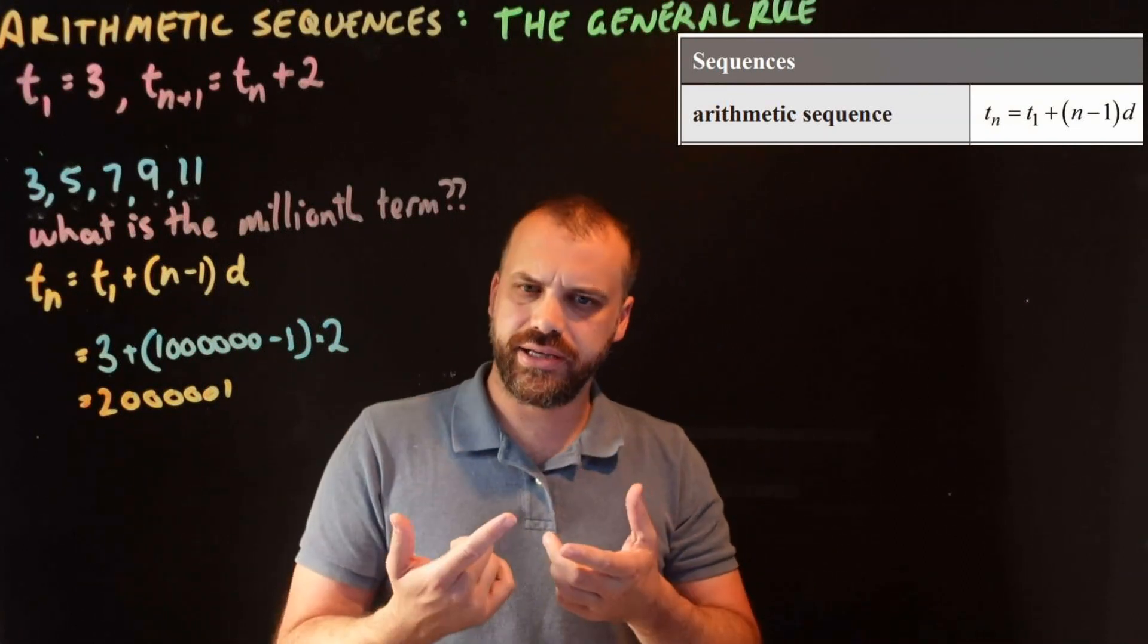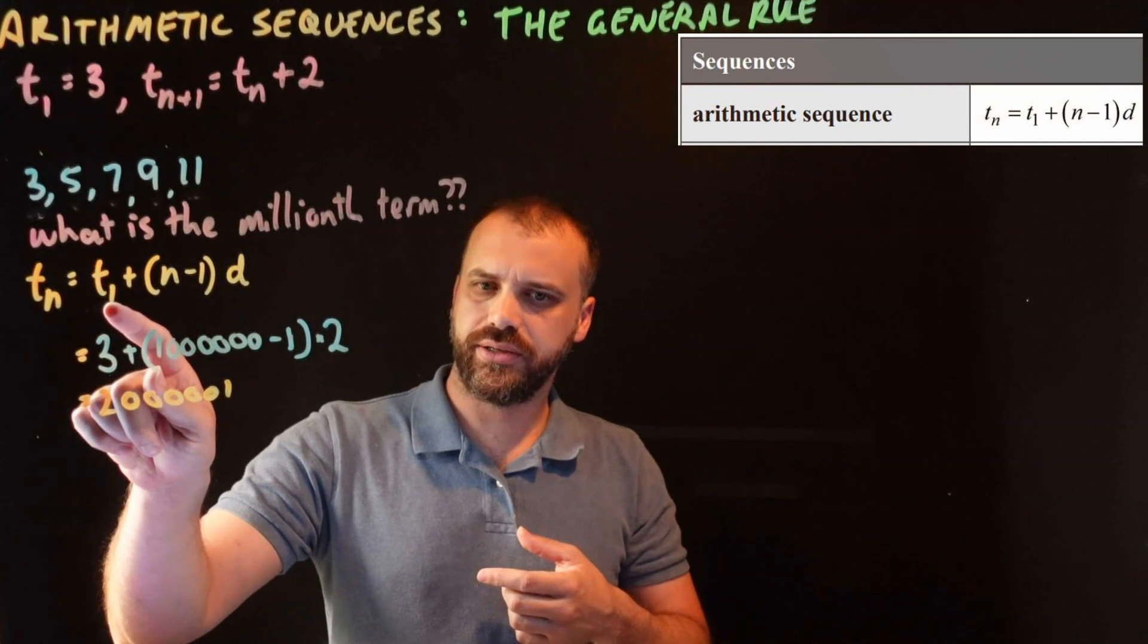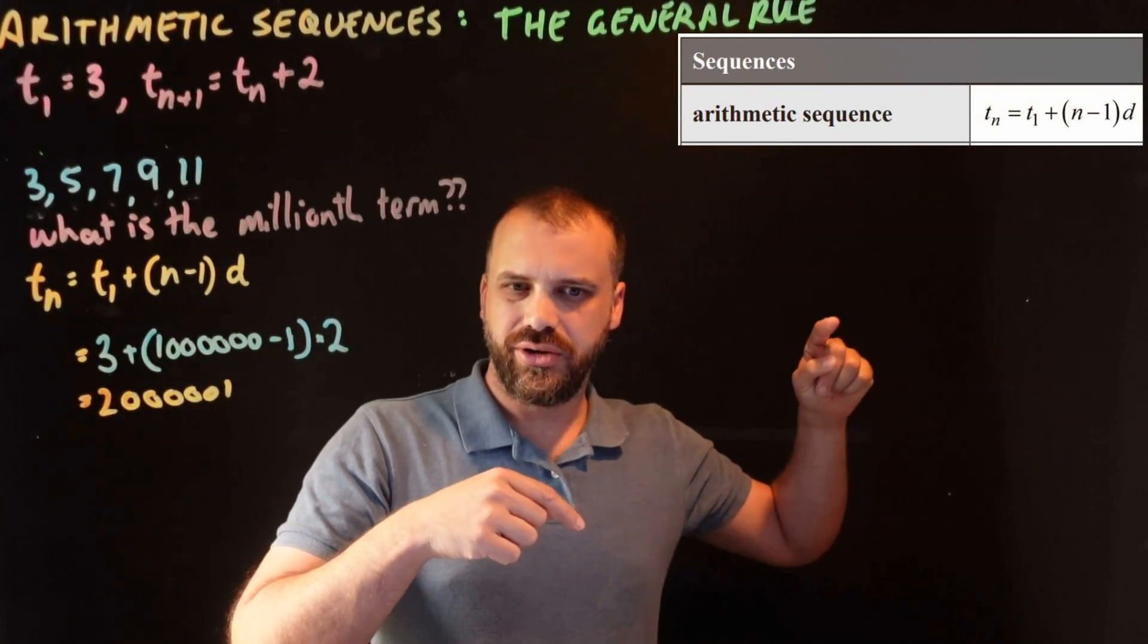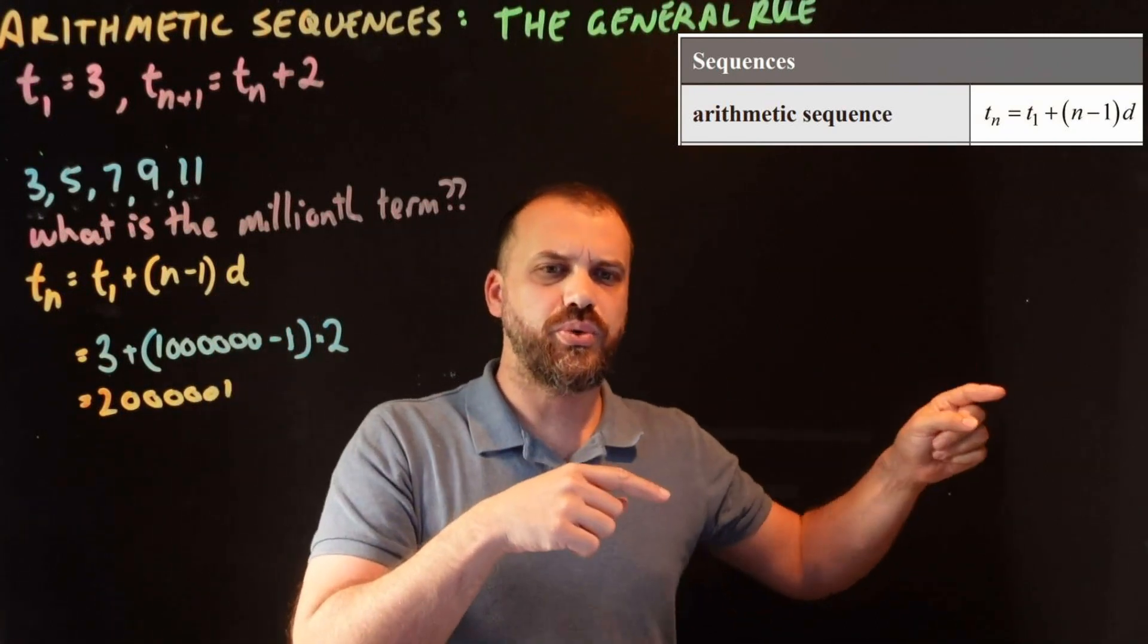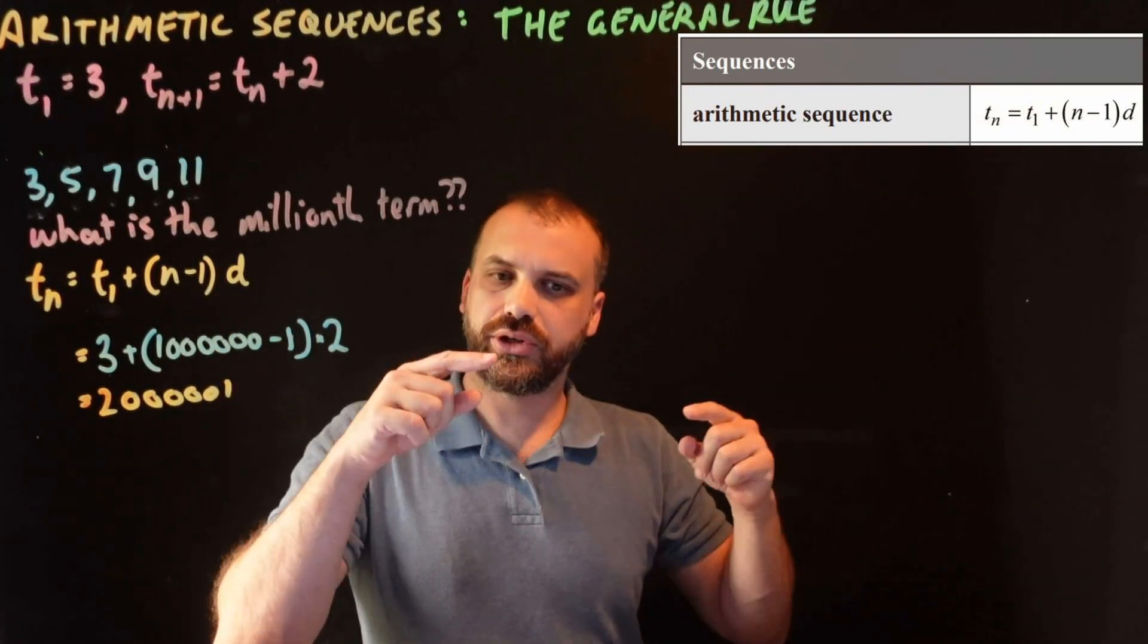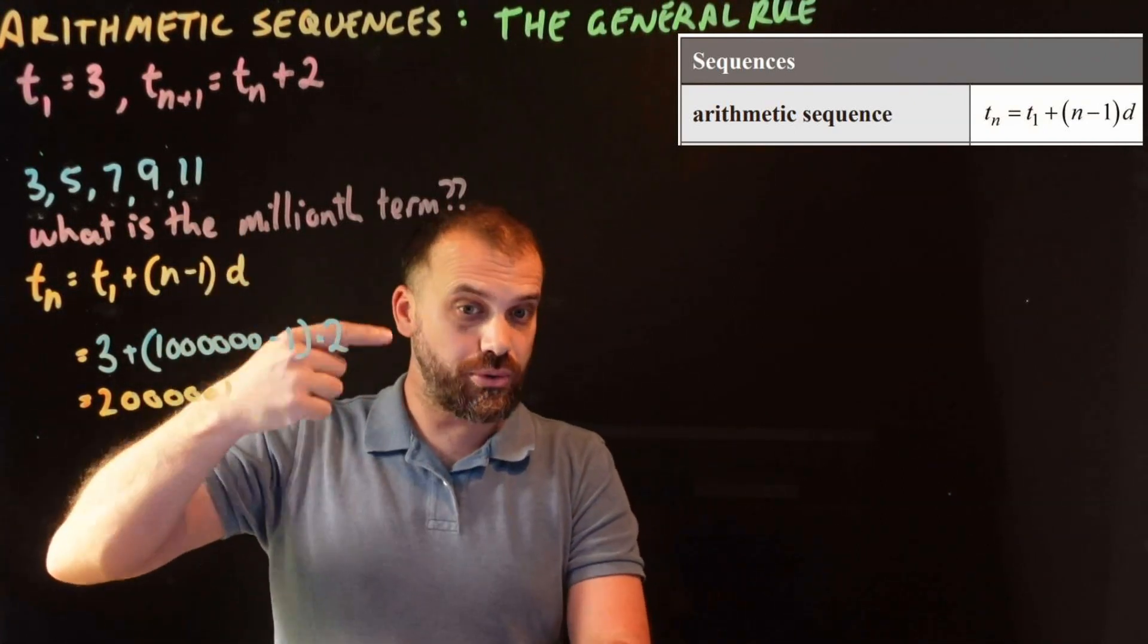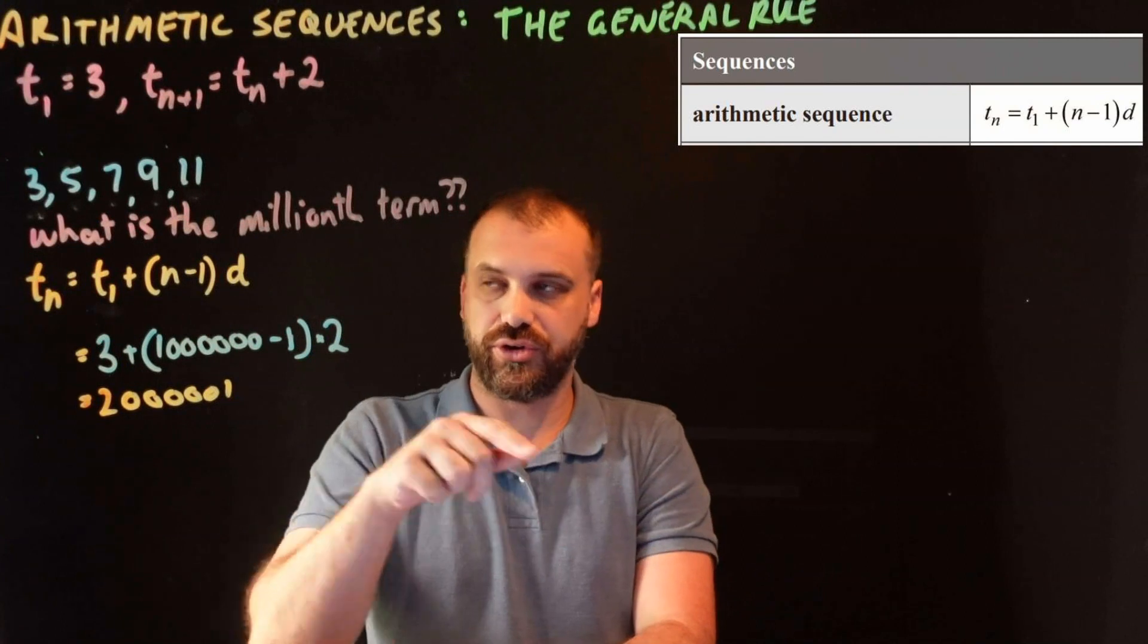Now, you might be looking at this going, okay, I get it. Here's our starting one, and then we have a certain number of common differences. Why minus 1? What's happening here? Well, go back to what I said earlier about this fifth term here. Look how many common differences there are to get to the fifth term.